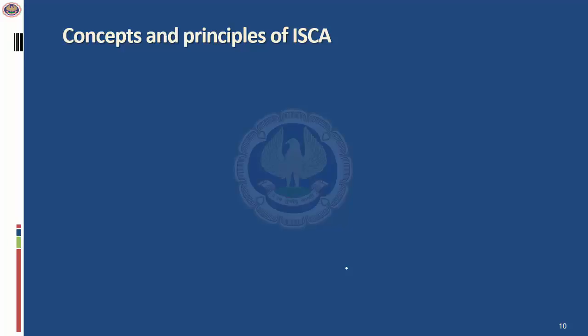Concepts and principles are fundamental to understanding information technology. You need to read topics for understanding, not just for remembering. If you look at the number of pages in ISCA, it is perhaps the lowest compared to any other subject — while accounting or income tax may have 800 to 1000 pages, ISCA has just 400 pages, divided into 8 chapters with an average of 40 to 50 pages per chapter. If you read once and understand, you don't need to read so many times.